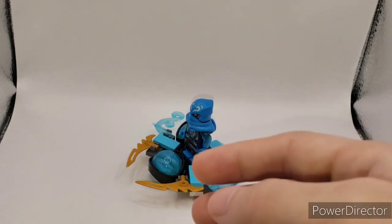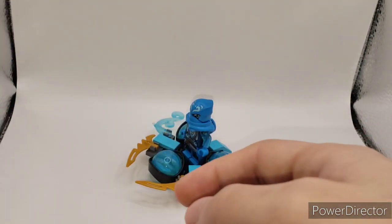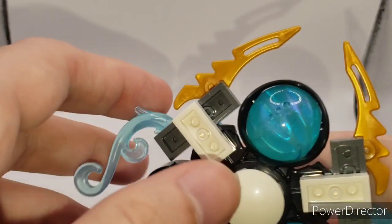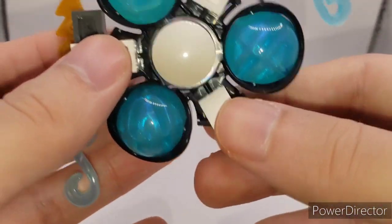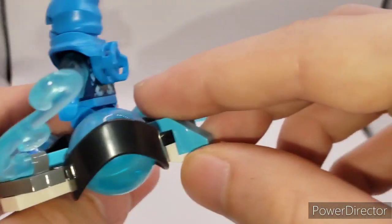Alright, next up we have is Nia. Same concept as Lloyd, except she's built a little bit differently. Instead of these being on the side and having angled pieces, you have a little slope right here so you can drift it.